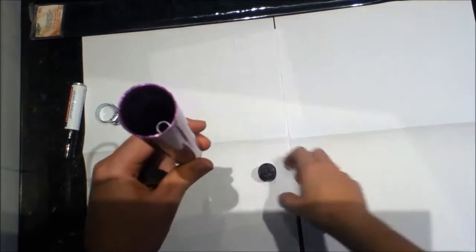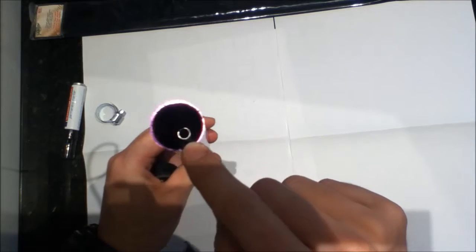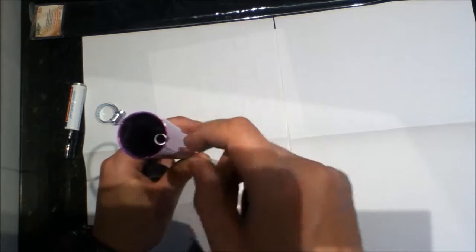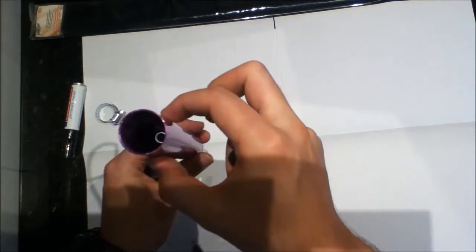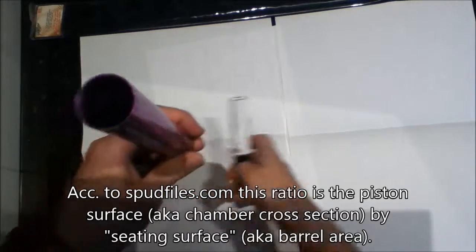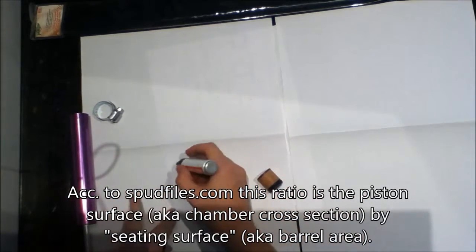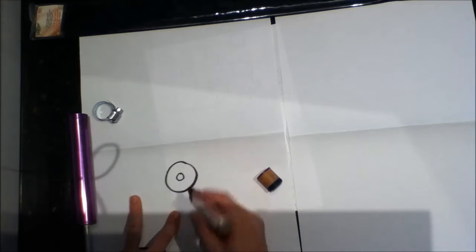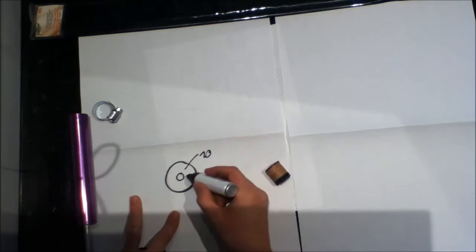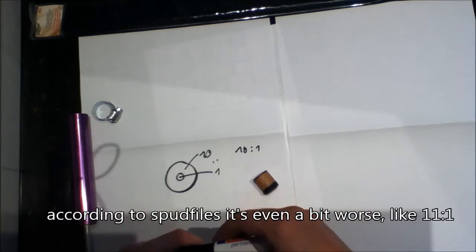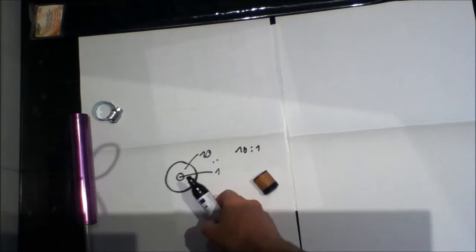As you can see here, according to spud files and spud wiki, this is not QAV since the ratio is much larger than one by one. The ratio is the surface area of the chamber, which is the whole cylinder minus the barrel. We have a cylinder like this size, this area, minus this area is almost ten times this same area.